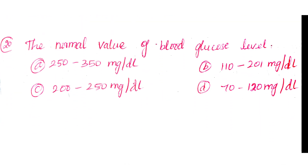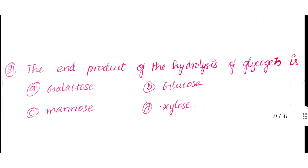Question number 20: The normal volume of blood glucose level. Option A: 250–350 mg/dL. Option B: 110–201 mg/dL. Option C: 200–250 mg/dL. Option D: 72–120 mg/dL. The answer is Option D: 72–120 mg/dL.